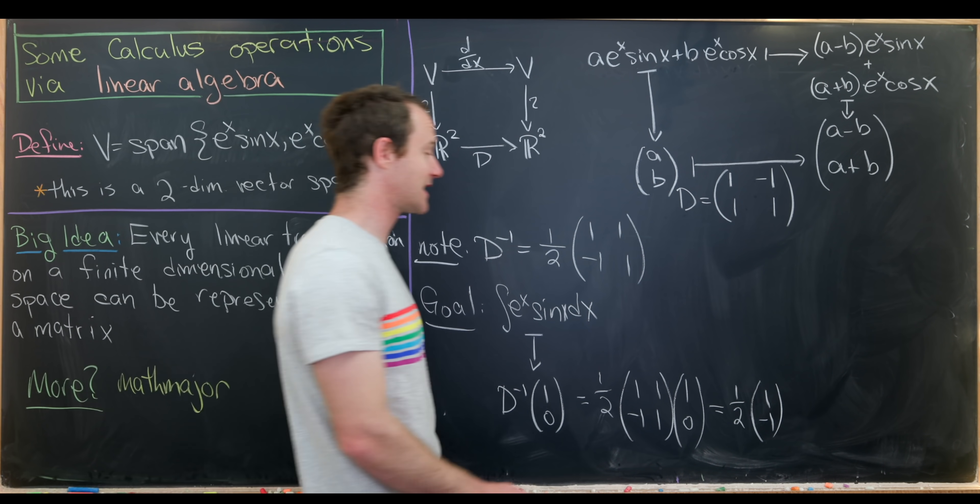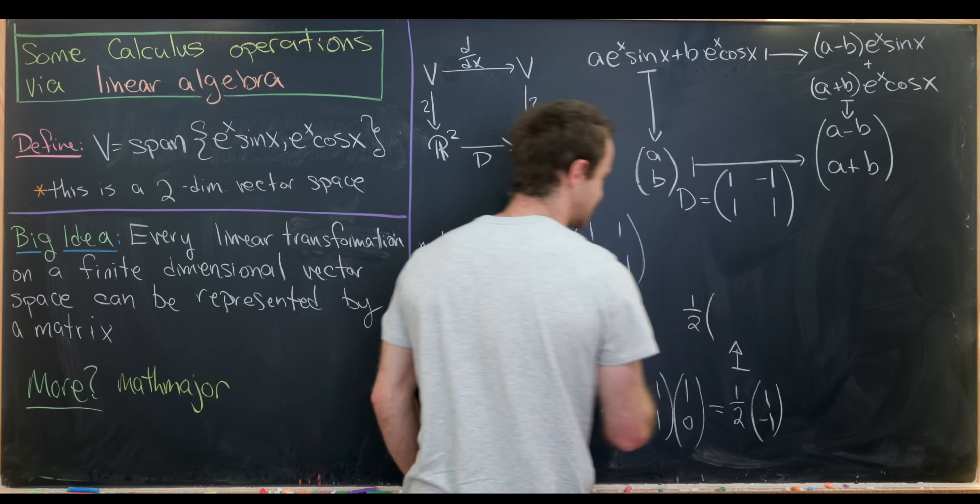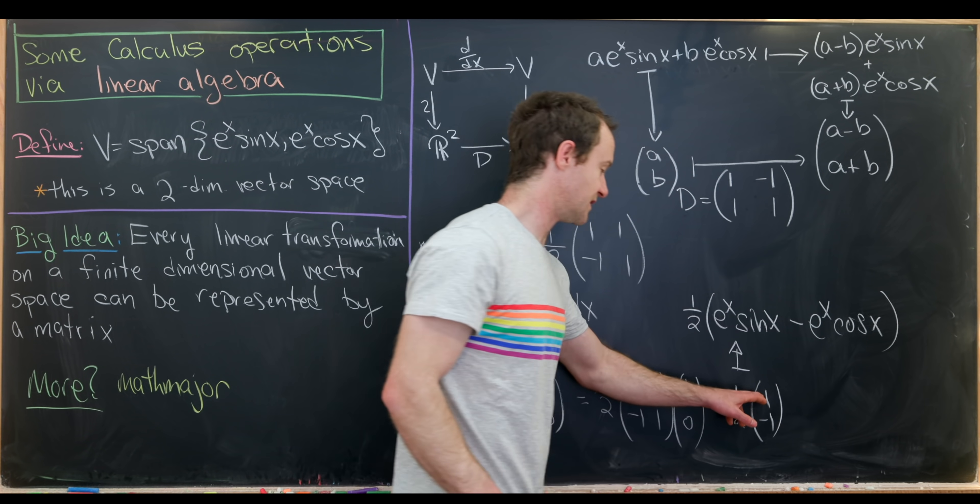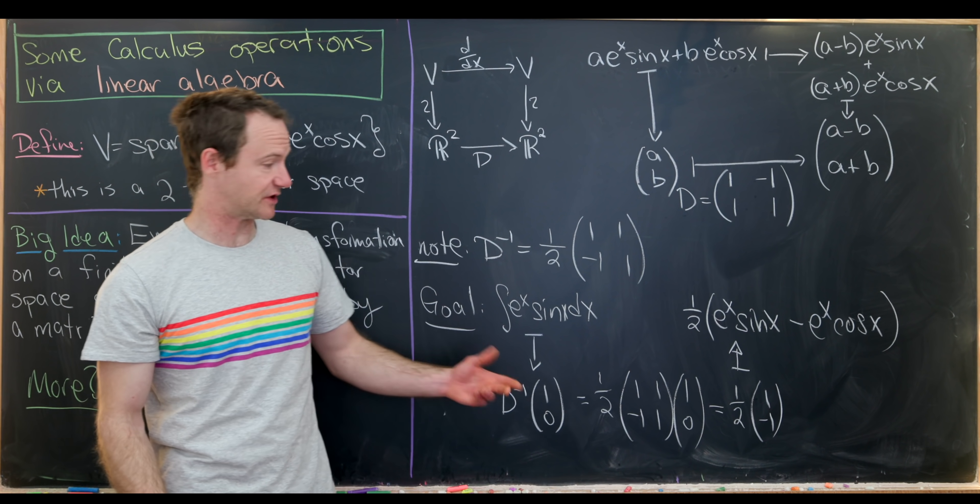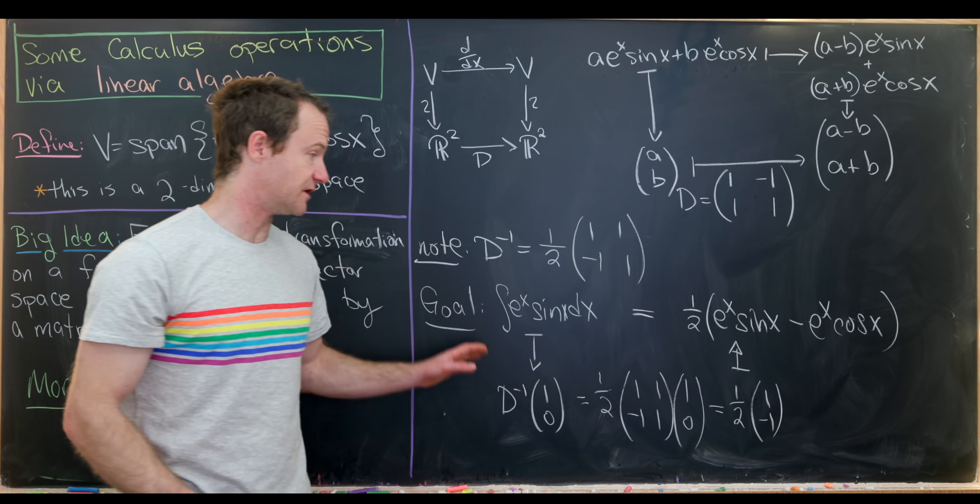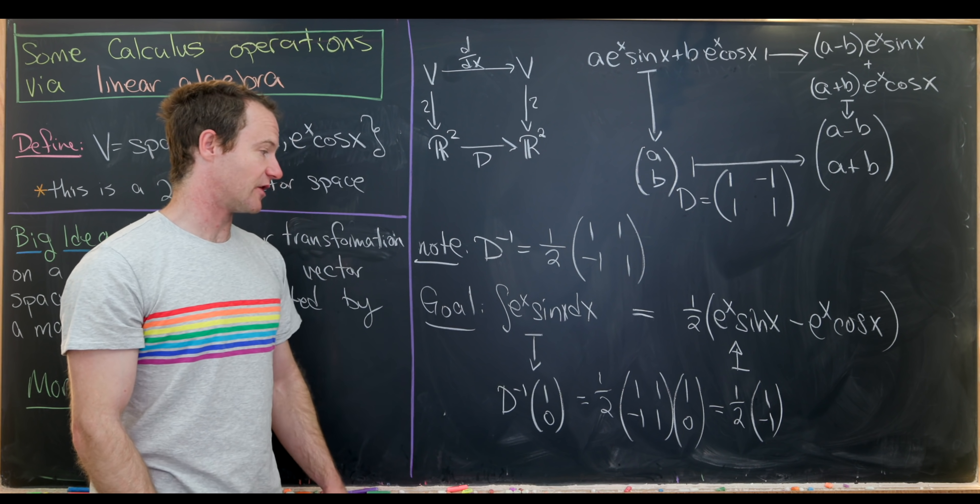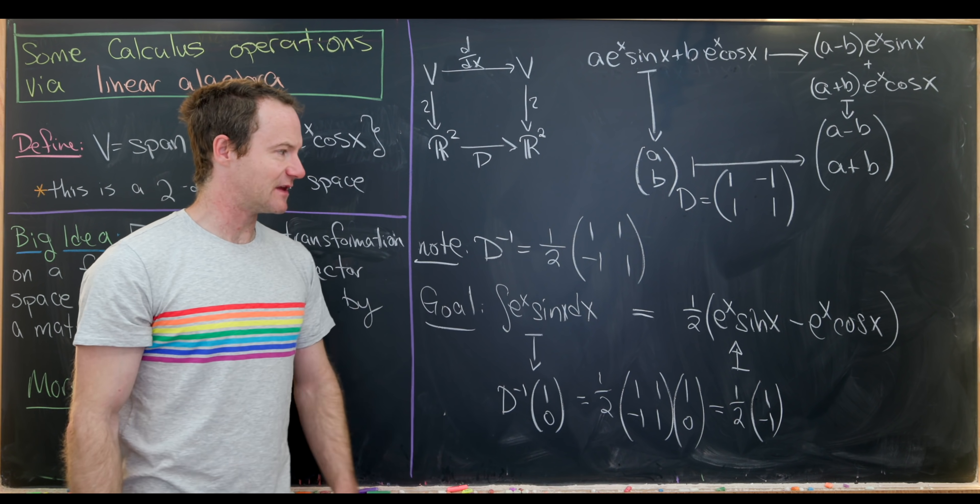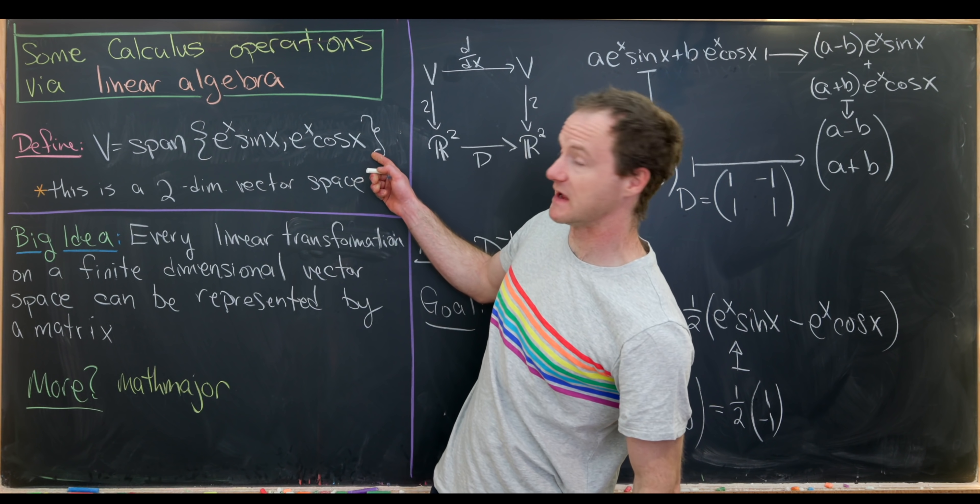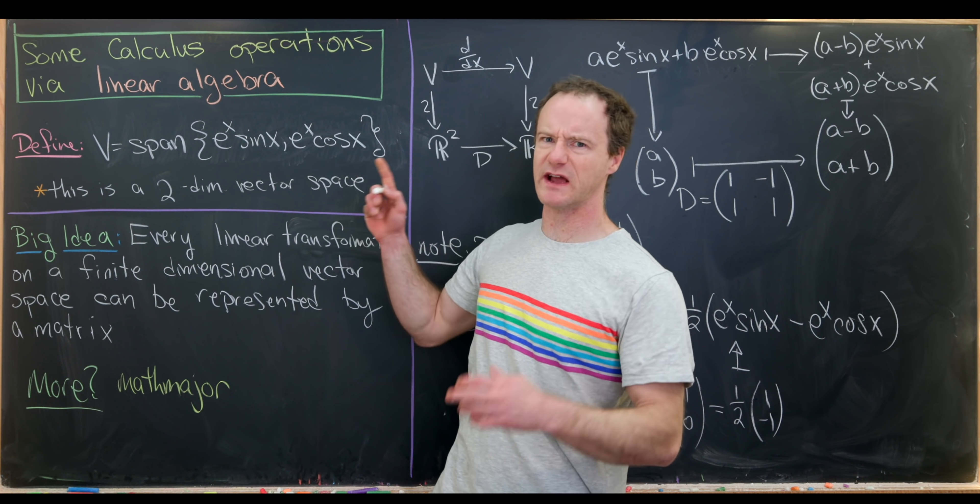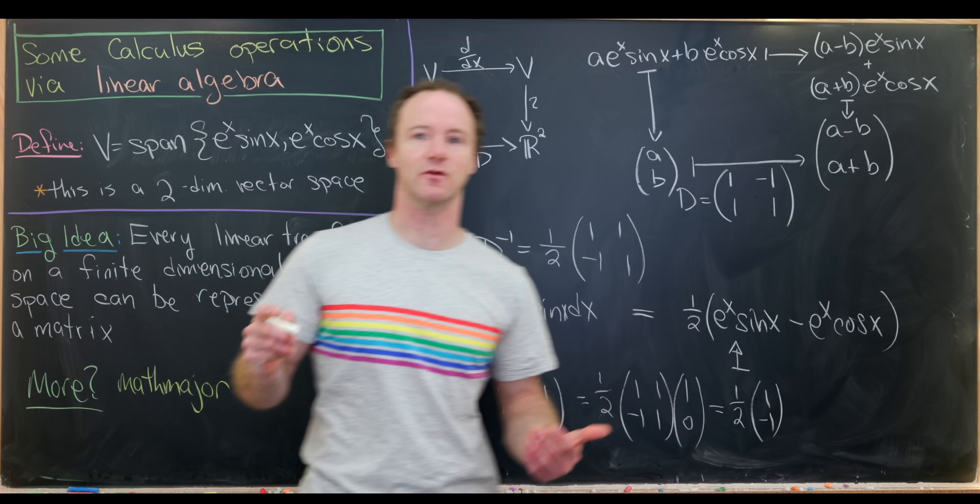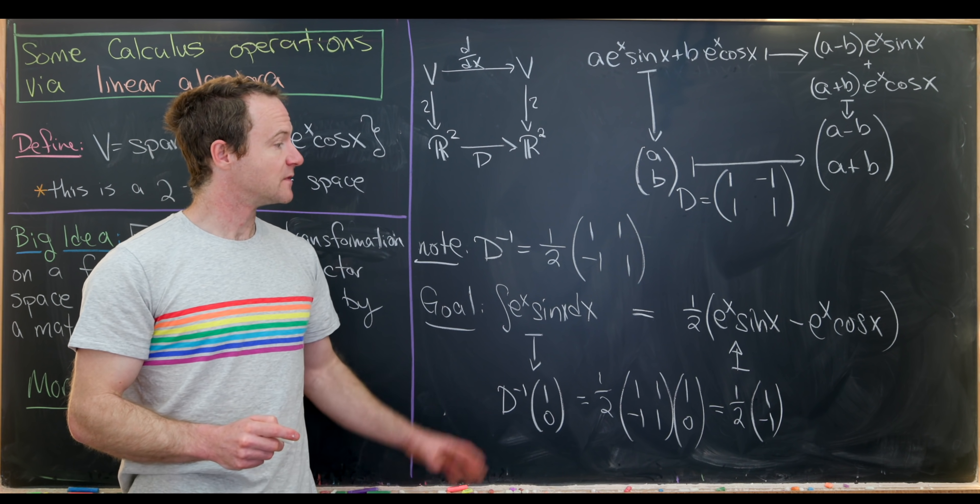But now we can push that back into our function space. And if we push that back into our function space, we see this is 1 half e to the x sine x minus e to the x cosine x. Because we have a 1 in the e to the x sine x portion of the vector and a minus 1 in the e to the x cosine x portion of the vector. But that's exactly what we need to end with to finish this whole diagram. And we've easily calculated the antiderivative of e to the x sine x. You might say that we're missing a plus c. And from a calculus point of view, we are missing a plus c. But in terms of this vector space and our interpretation, there are actually no like free constants in this vector space. Because one of the basis vectors is not equal to the number 1. So we're in fact not really missing a plus c in this context. That's a good place to stop.